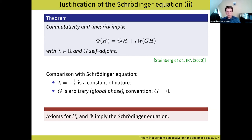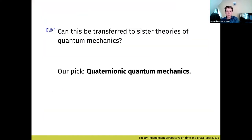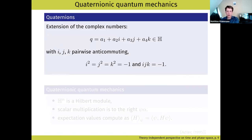Writing down axioms is easy when you know what you're aiming for, so we wanted to test whether our axioms are good by applying them to another theory — quaternionic quantum mechanics. It has to be very similar to quantum theory because we use pure states and unitaries. Quaternionic quantum mechanics is one of the sister theories of quantum theory, dating back to the early development of quantum mechanics. You could use real numbers or go beyond complex to quaternions — there are whole books on the subject.